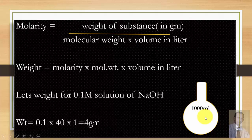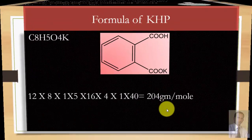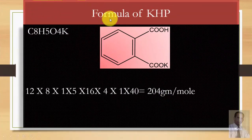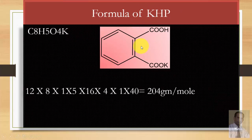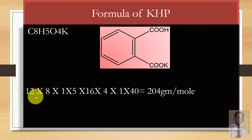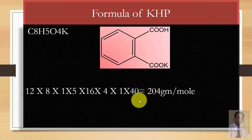The solution is now ready, but we must standardize it — we need to verify whether it really has a 0.1 molar concentration. The substance against which we will standardize sodium hydroxide is KHP — potassium hydrogen phthalate — which is a slightly acidic salt. The calculation of its molar mass gives 204 grams per mole.